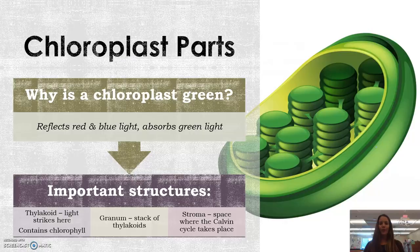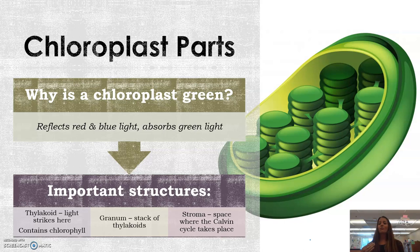You need to memorize the whole formula — just file that away for later. Let's get into the chloroplast a little bit more. Why is the chloroplast green? A chloroplast absorbs green light and as a result reflects blue and red. There are three important structures you need to be aware of. The first one is the thylakoid. This is where the light strikes, where the chlorophyll is — it's one of these little discs you see here. That is a single thylakoid.